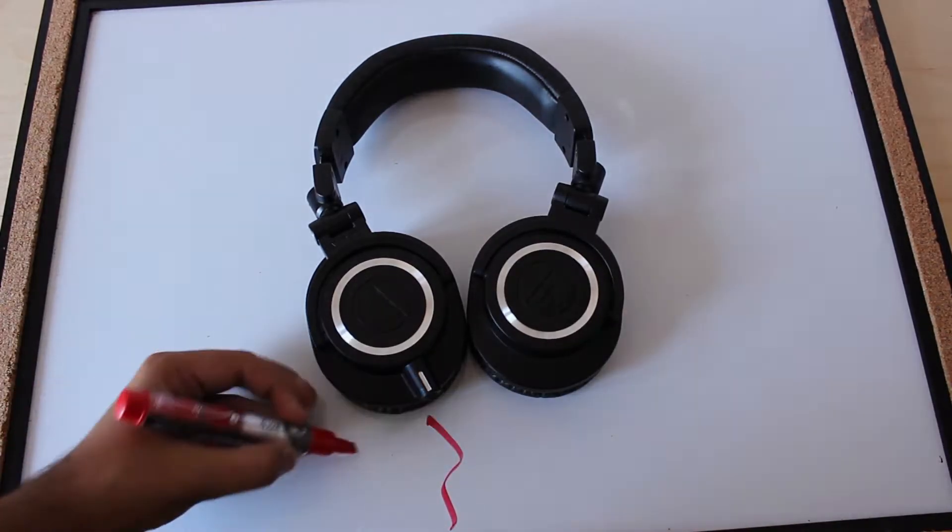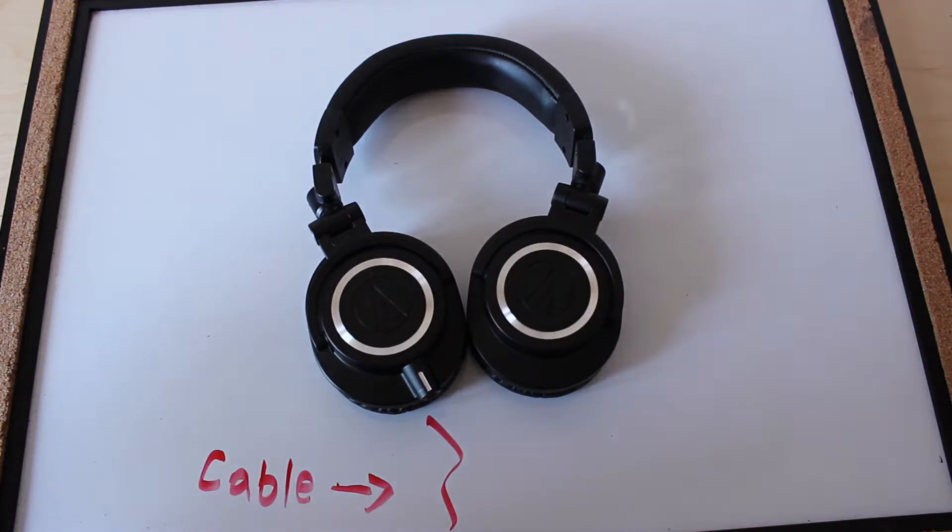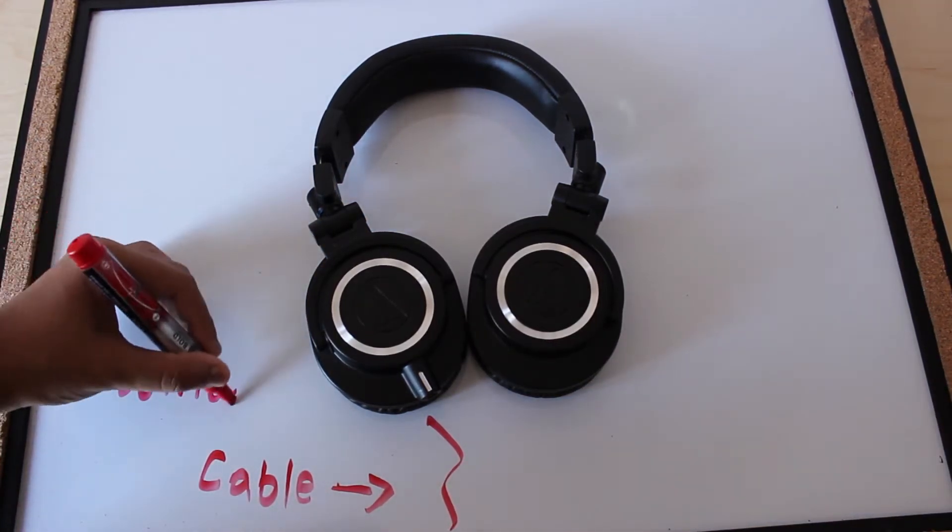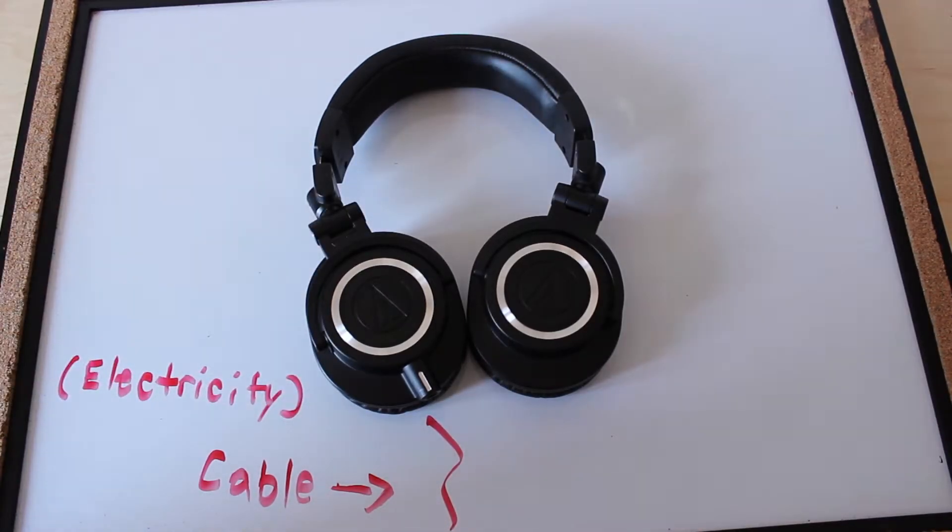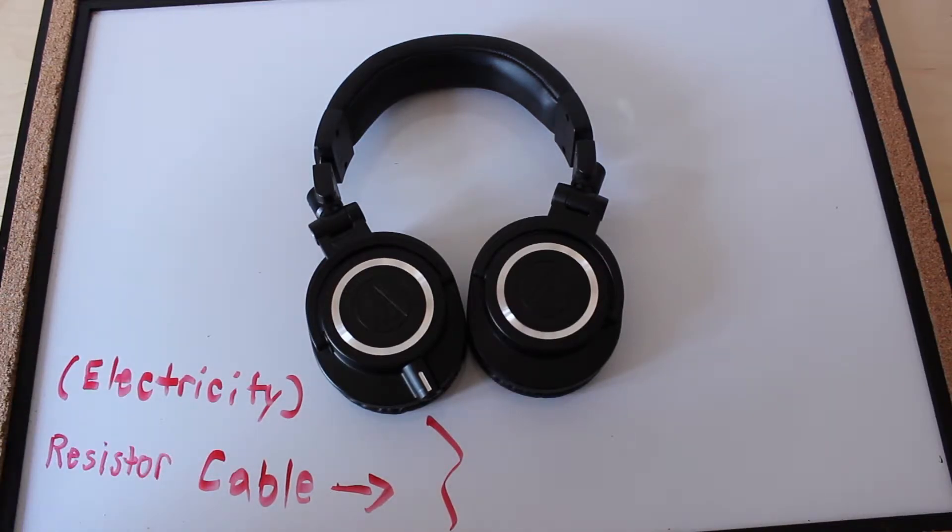Let us start with the simplest part, the cable. The role of the cable is to provide electrical energy to your headphones. When you turn the volume up or down, a simple resistor in the device hosting the sound changes its resistance. Therefore, when you listen to music and turn the volume down, you find that sometimes the highs and lows of the music change as well. This is because less electricity is being supplied to the headphones.